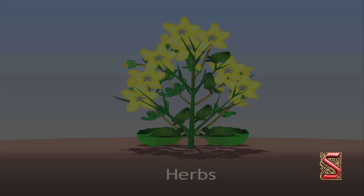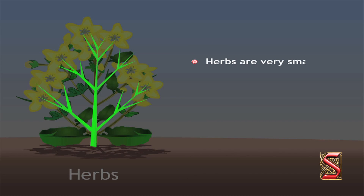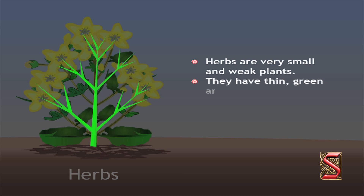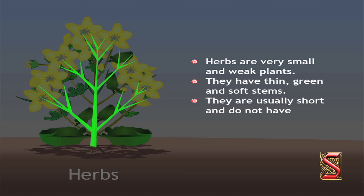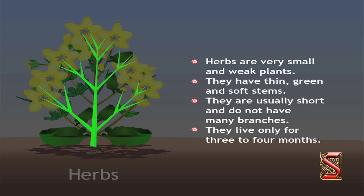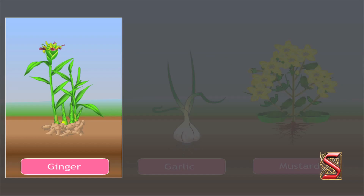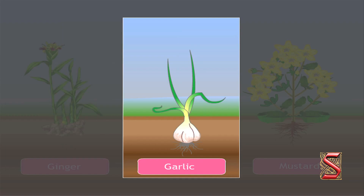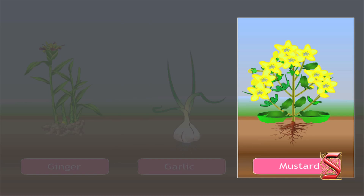Herbs are very small and weak plants. They have thin, green and soft stems. They are usually short and do not have many branches. They live only for 3 to 4 months. Some examples of herbs are ginger, garlic and mustard.